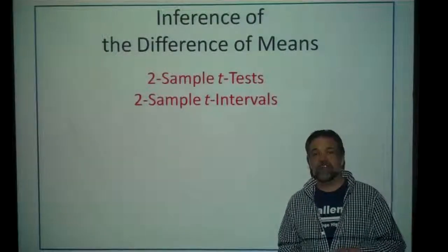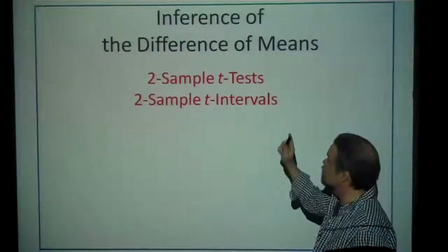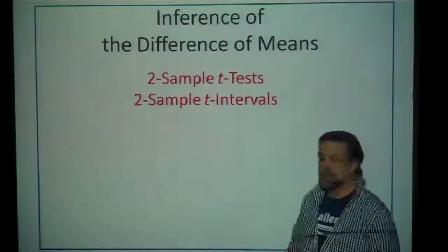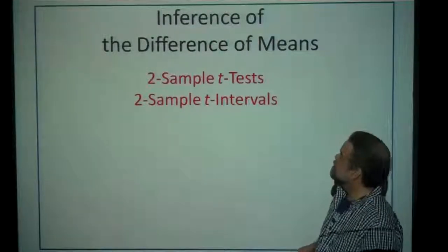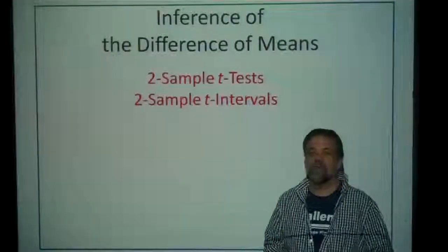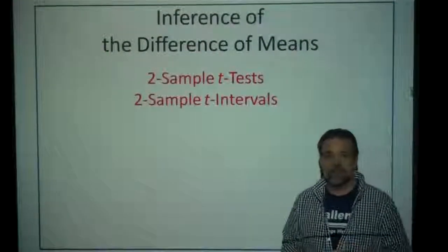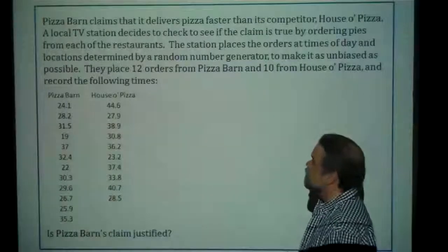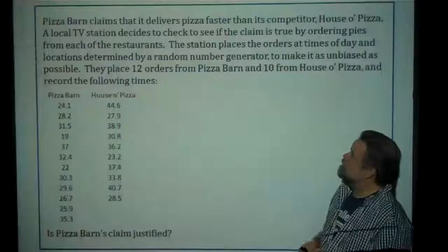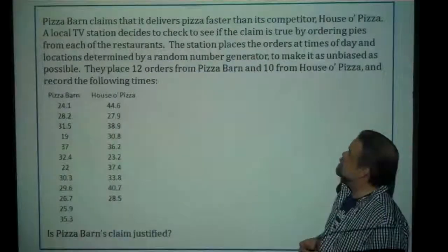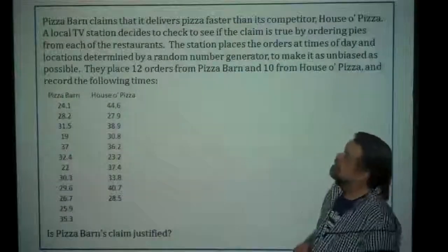Hey stat students, time for another video. This one is going to be on two-sample t-tests and two-sample t-intervals — the inference of the difference of means. Let's just look at an example right away. Fast Pizza Barn claims it delivers pizza faster than its competitor, House of Pizza.